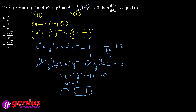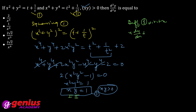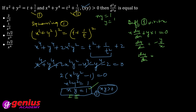Isko third equation lete hain: xy = 1. Differentiate with respect to x using product rule: x(dy/dx) + y = 0, toh dy/dx = −y/x. y = 1/x (since xy = 1), so dy/dx = −(1/x)/x = −1/x².